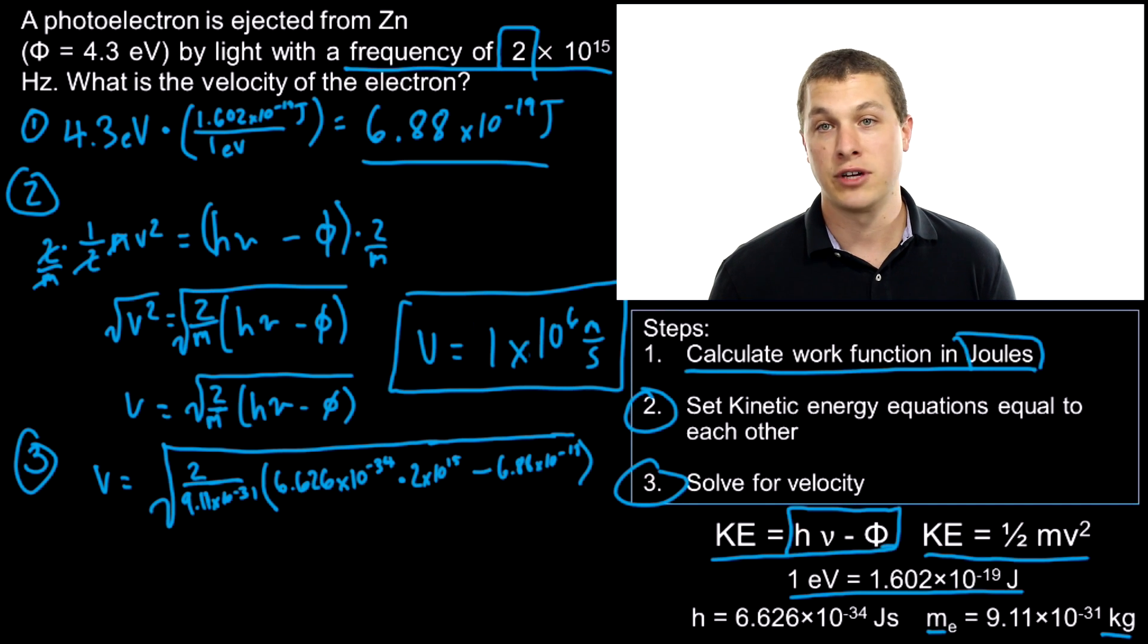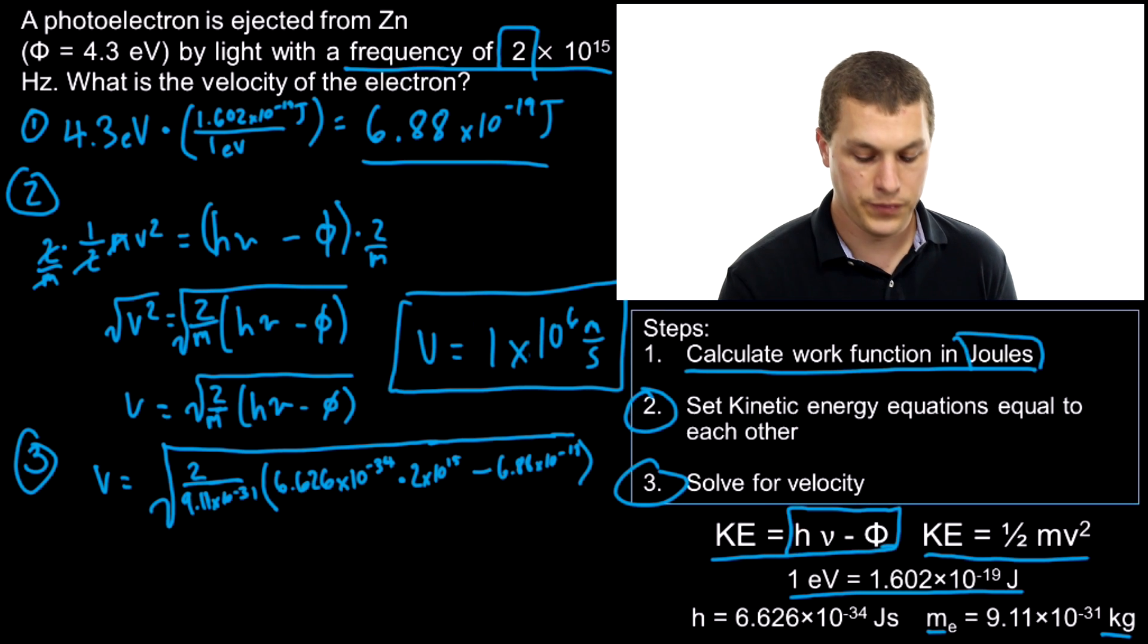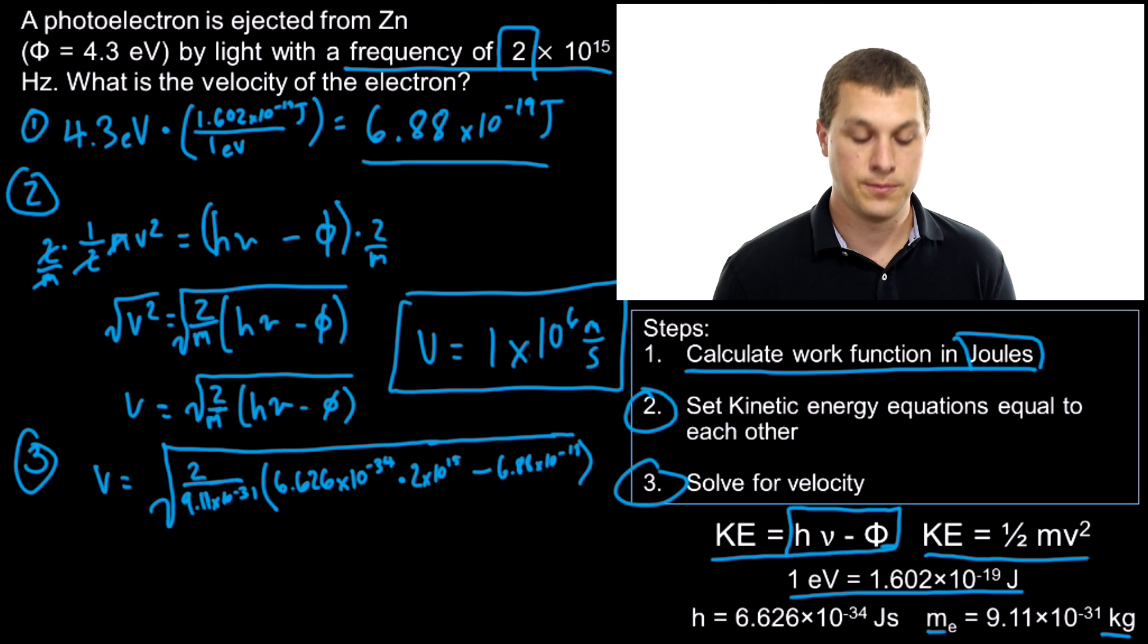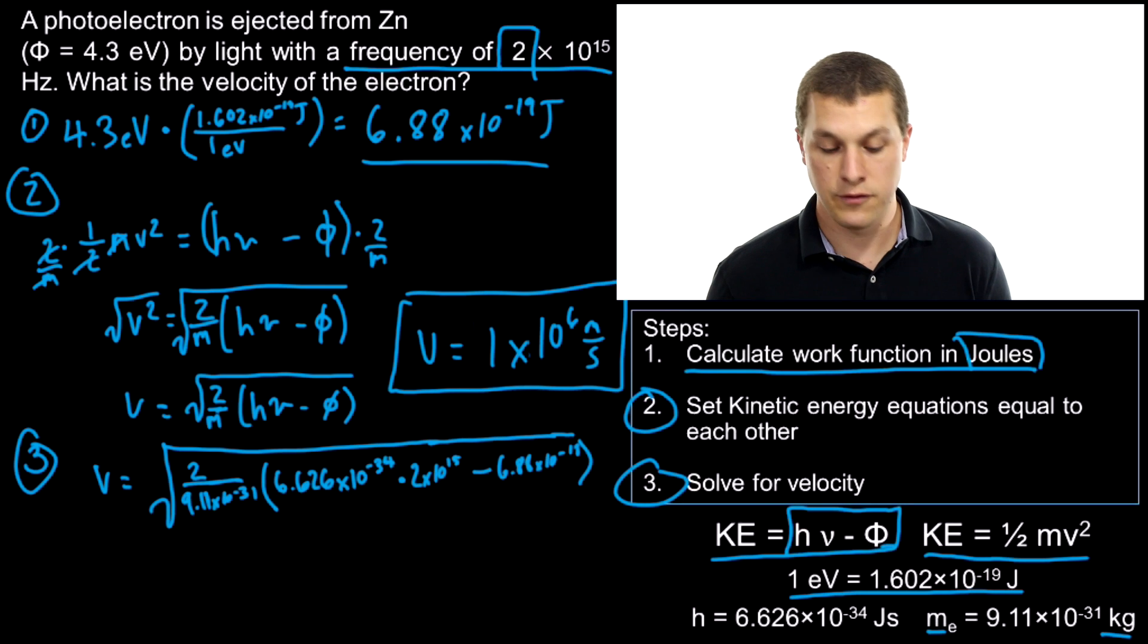If that velocity ever gets close to 10⁸ m/s, you need to start thinking about relativistic equations. One other note: if you ever get an imaginary result for your velocity (that is, you have to take the square root of a negative number), that means your frequency of your photon isn't actually sufficient enough to eject an electron. This is how we can solve for the velocity of an electron coming off of a metal surface in the photoelectric effect. All we need to do is a little algebra and remember our kinetic energy expression in terms of mass and velocity.